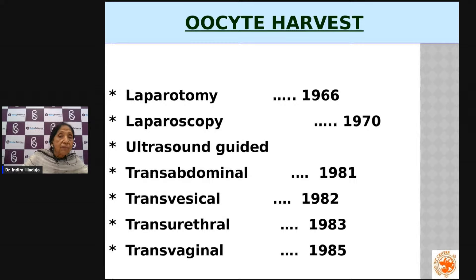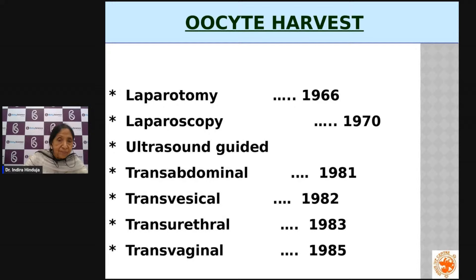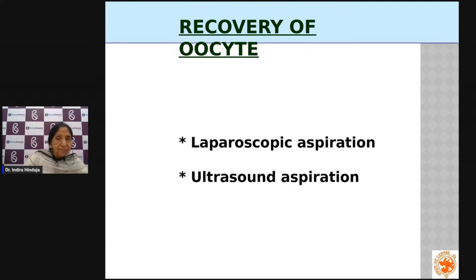Egg collection techniques have evolved significantly. Way back in 1966, a large abdominal incision was made. In the 1970s, laparoscopy was used to insert a needle under scope guidance to identify and aspirate follicles. Then ultrasound arrived in 1981 — initially the needle was inserted from the abdomen, sometimes through the bladder or urethra. Now the needle is placed transvaginally, guided by ultrasound. Laparoscopy was the earliest common method; ultrasound-guided transvaginal retrieval is now the standard.